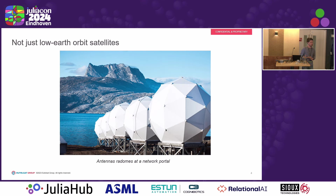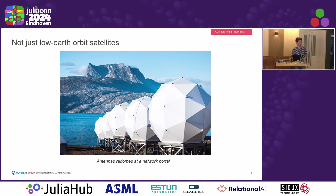It's not just about the satellites. You can put as many satellites as you want in orbit — it won't really help if you don't have the ground infrastructure to follow up. Here are our antennas, located in Canada or above the Arctic Circle. They receive signals from satellites and relay them back to wherever the satellites want the data to go.